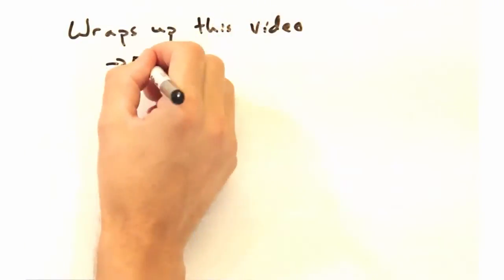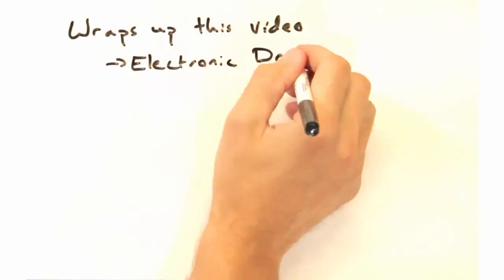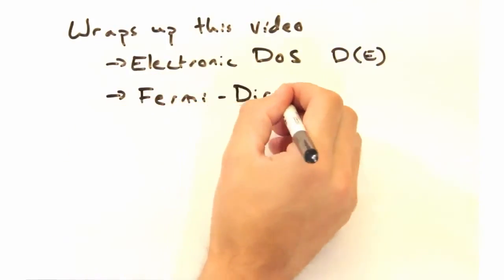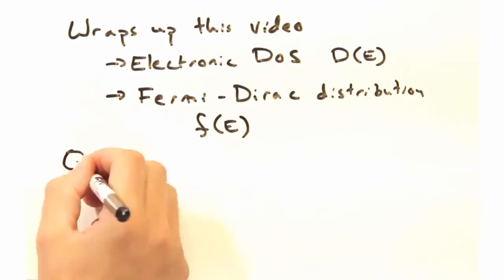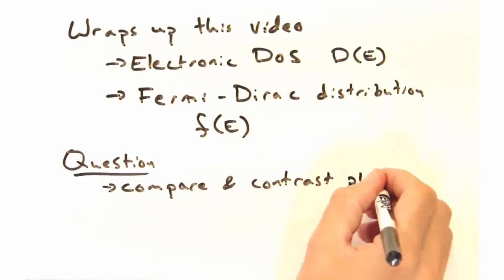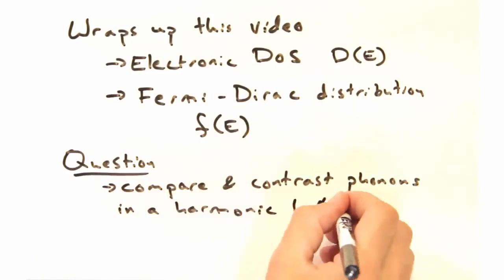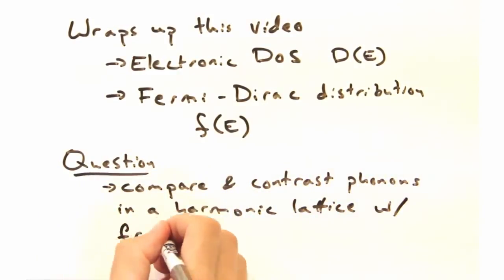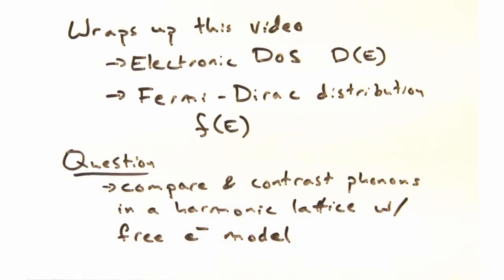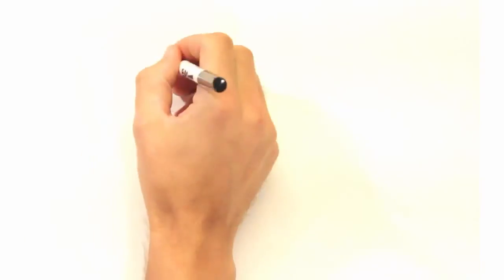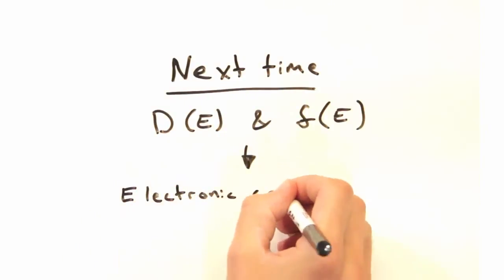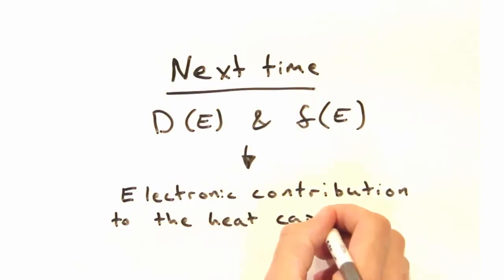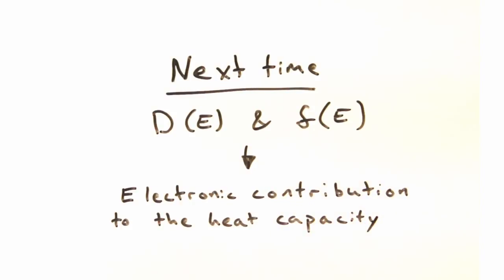Well that wraps up today's video. We hope you enjoyed the short description of electronic density of states and the Fermi-Dirac distribution. Here's a question which should help make the transition from phonons to electrons a little smoother: compare and contrast phonons in a harmonic lattice with the free electron model. Next time, we'll use our understanding of density of states and the Fermi-Dirac distribution to investigate the electronic contribution to the heat capacity.